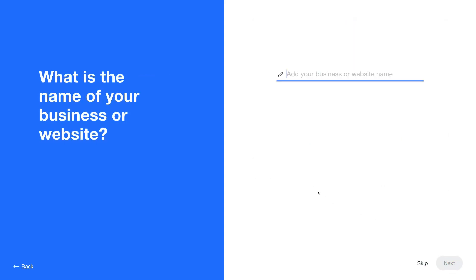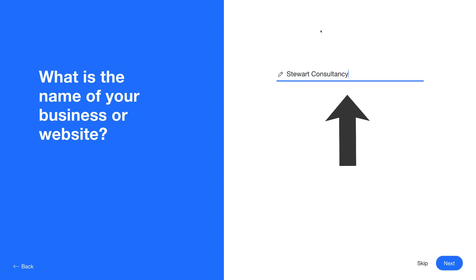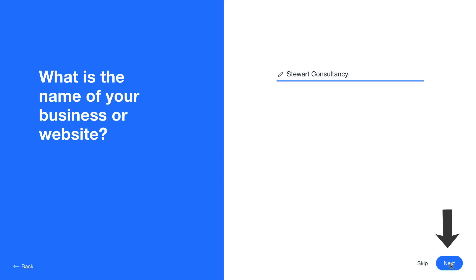When you're happy with your feature selection, pop down and click Next. It then asks: what is the name of your business or website? For us our business is going to be called Stuart Consultancy. I'm happy with that, so I'll pop down and click Next.